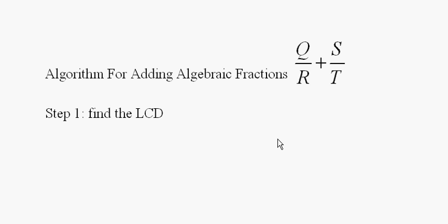In this lecture we're going to learn an algorithm for adding algebraic fractions that will work with any two fractions that you want to add. We're going to represent it by Q over R plus S over T, where Q, R, S, T can be any algebraic expressions. The first step, of course, is to find the lowest common denominator.